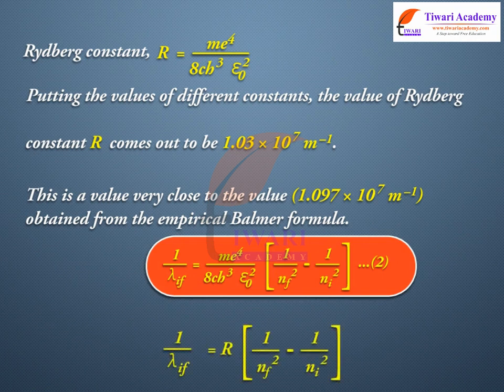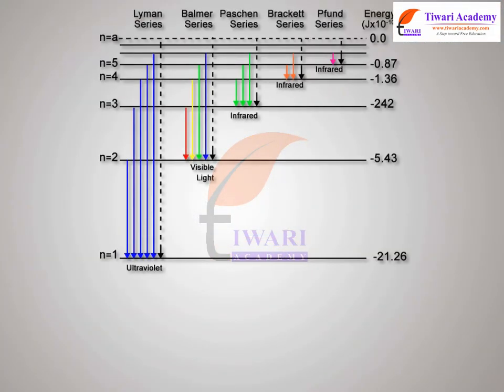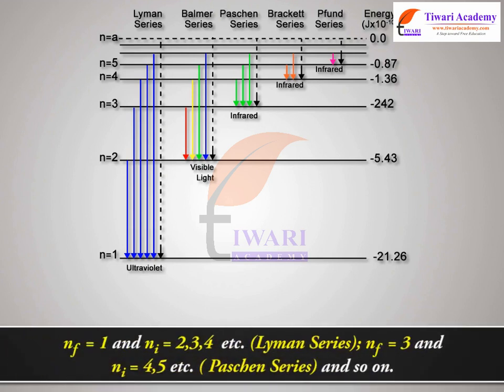The general Rydberg formula: 1/lambda_if = R * [1/nf^2 - 1/ni^2]. Bohr's model suggested the presence of other series spectra for hydrogen atom: those corresponding to nf = 1 and ni = 2, 3, 4, etc. (Lyman series); nf = 3 and ni = 4, 5, etc. (Paschen series); and so on.